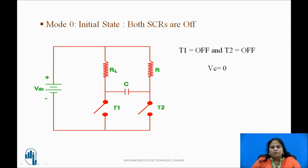Let us start with mode 0, which is the initial state. In this state, none of the SCRs are triggered. So both the SCRs are in off state and act as open switches. Due to this, there is no path available for the capacitor to charge and hence voltage across the capacitor Vc is 0. Thus, at the end of mode 0, T1 is off, T2 is off, and Vc is equal to 0.